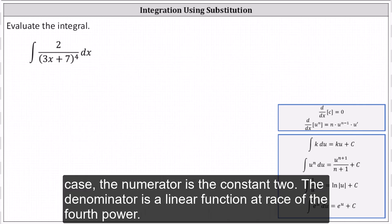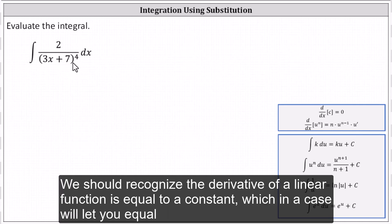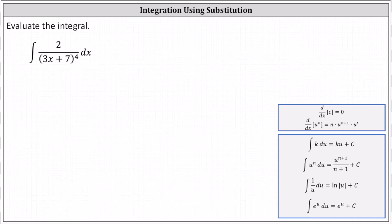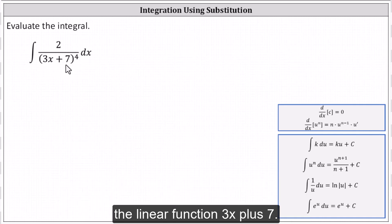In this case, the numerator is the constant two. The denominator is a linear function raised to the fourth power. We should recognize the derivative of a linear function is equal to a constant, which indicates we'll let u equal the linear function 3x plus 7.